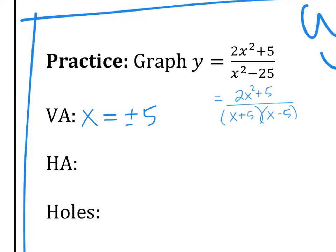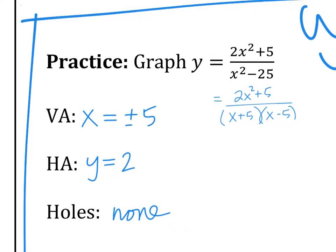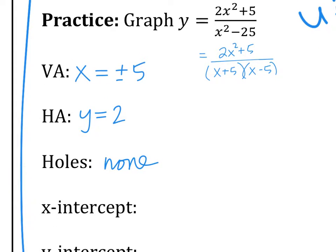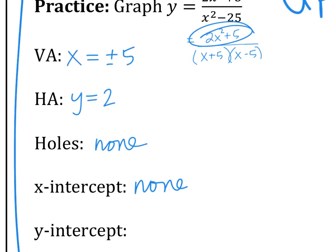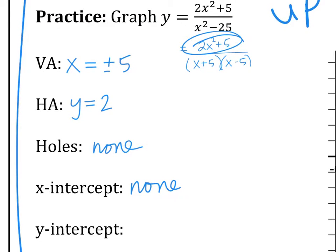Second, the horizontal asymptote — look at the degree. The degrees are the same, so it's the ratio of the leading coefficients, which is 2. There are no holes because nothing cancels. The x-intercept is what makes the numerator zero — nothing does except imaginary, so that is none. The y-intercept is when x is zero, so that gives (0, −1/5).